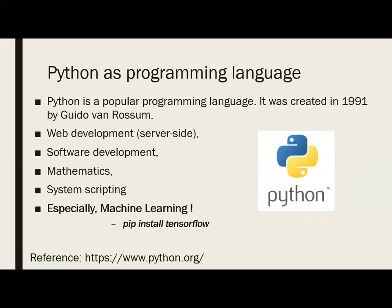It could be R language, Python, or even JavaScript — TensorFlow supports JavaScript as well. Python is a popular programming language created in 1991, before Java. It is generally used for web development, software development, mathematics, and system scripting, and is especially useful for machine learning. To install TensorFlow through Python, the command is: pip install tensorflow. If you don't know Python yet, it's better to learn it for one to two weeks. If you're already a developer, it's easy to learn within a week; if entirely new, it may take up to three weeks. The reference is python.org.